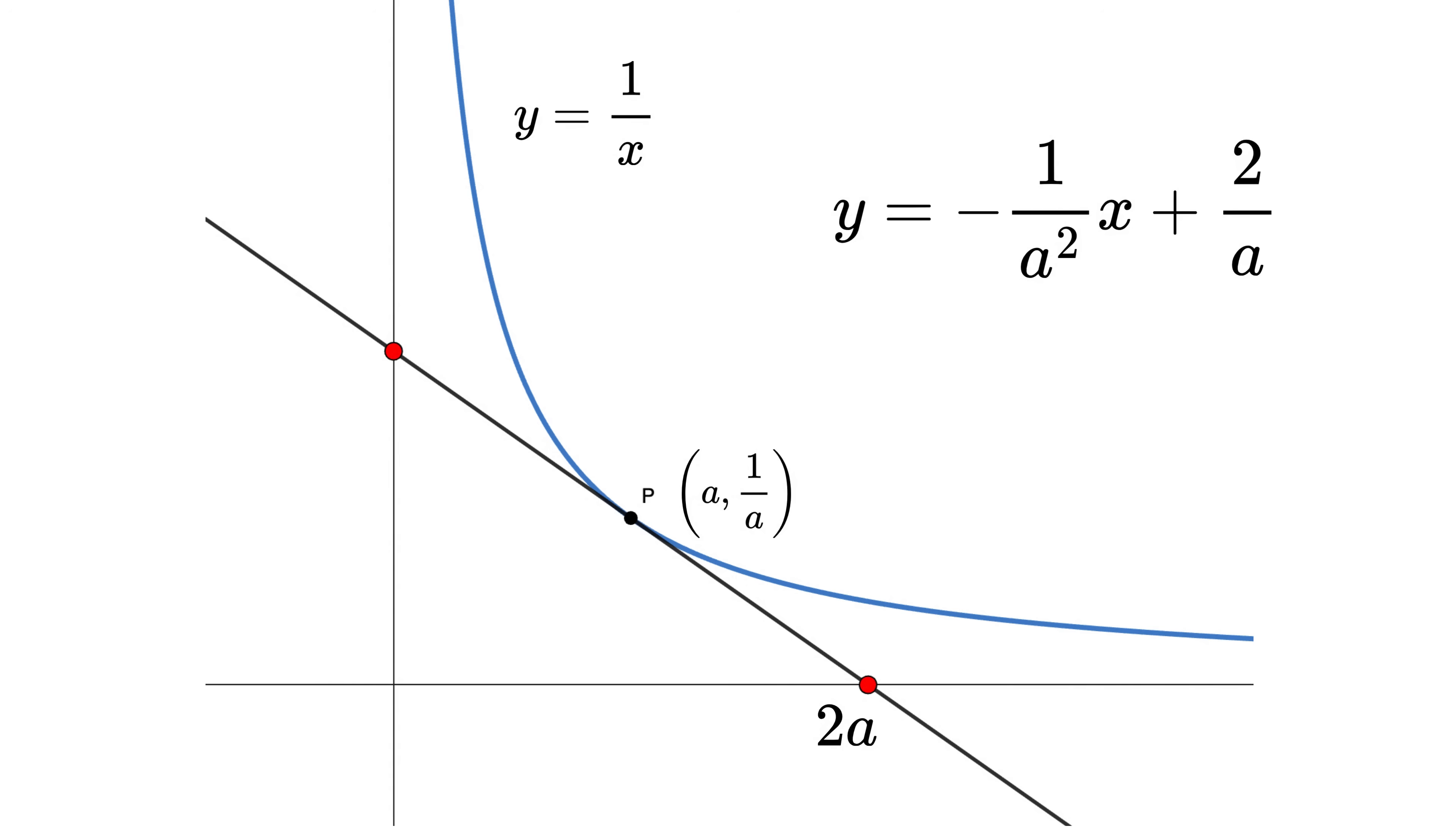Similarly, we can find the y-intercept, or this point by putting x equals 0. We get this. So, y-intercept equals 2 over a. Therefore, the triangle formed has base 2a and height 2 by a.